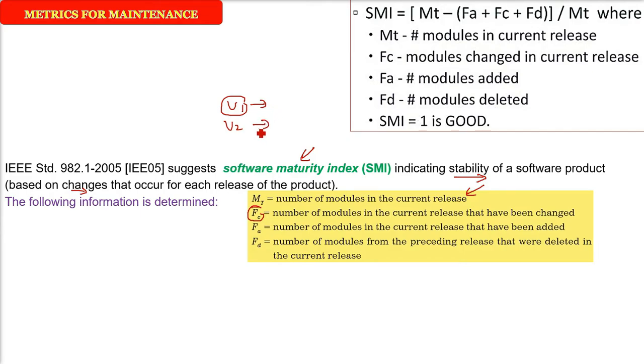What is FA? This is the number of modules in the current release that have been newly added, extra added.